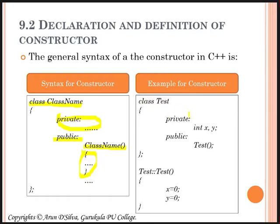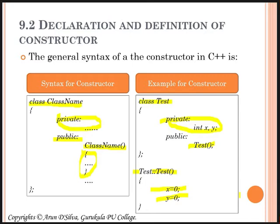That was the constructor defined within the class. Now the constructor can also be defined outside the class. The class 'test' has a private section with int X and Y. I have declared the constructor 'test()' inside the class with a semicolon. To define it outside: no return type specifier, then class name, scope resolution operator, and the constructor name 'test', and initialize X equals zero, Y equals zero. Both inside and outside definitions work the same.